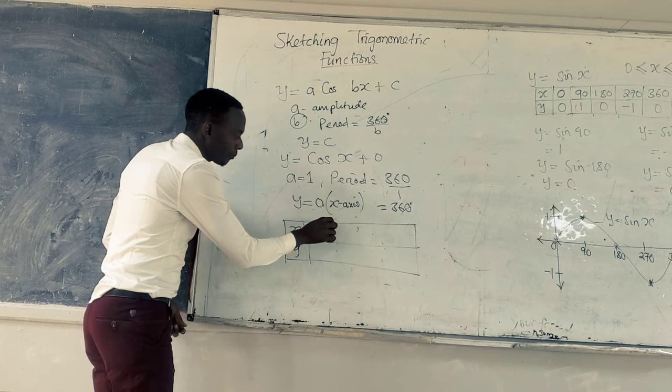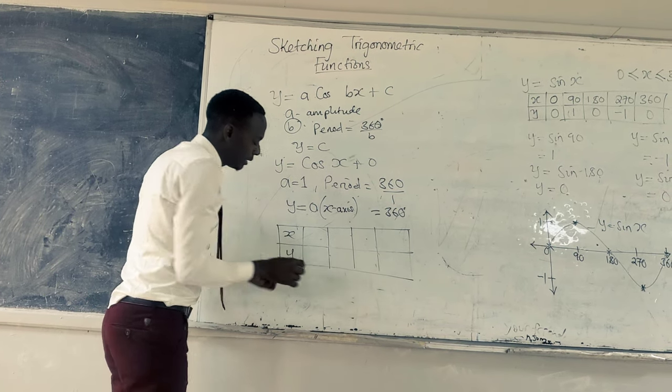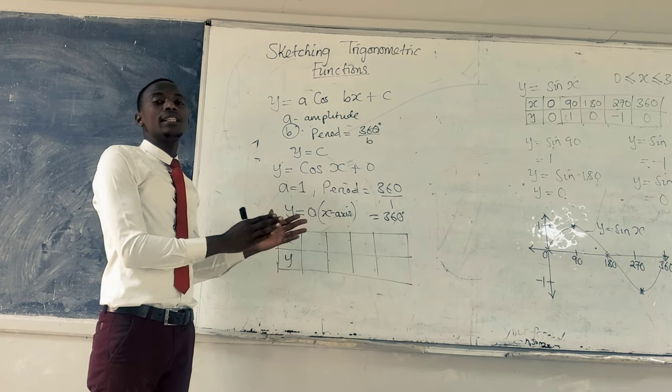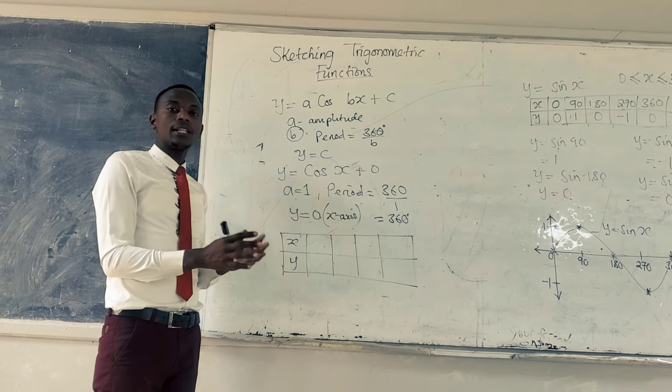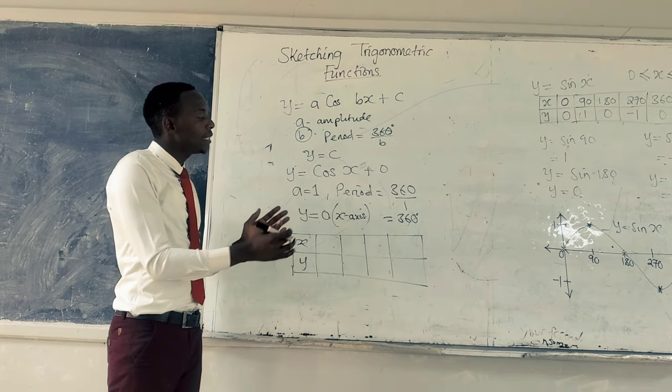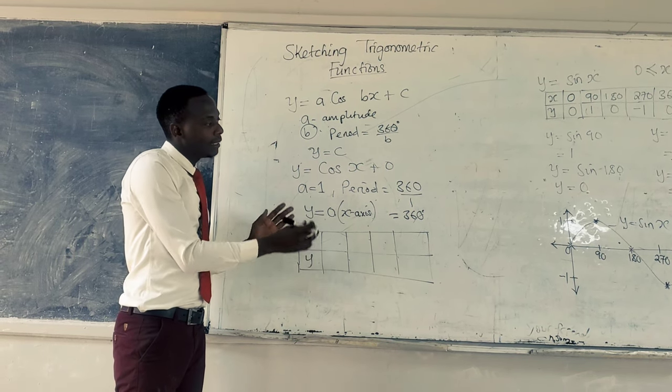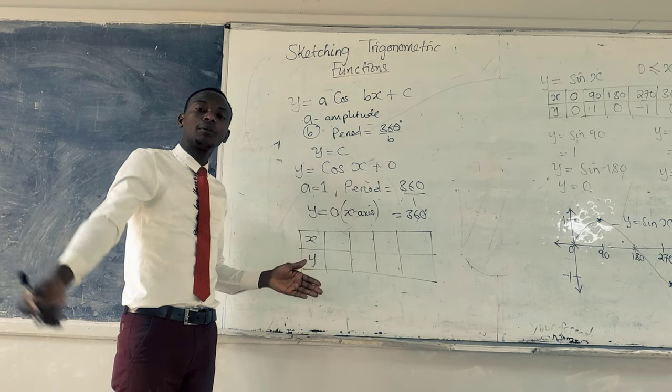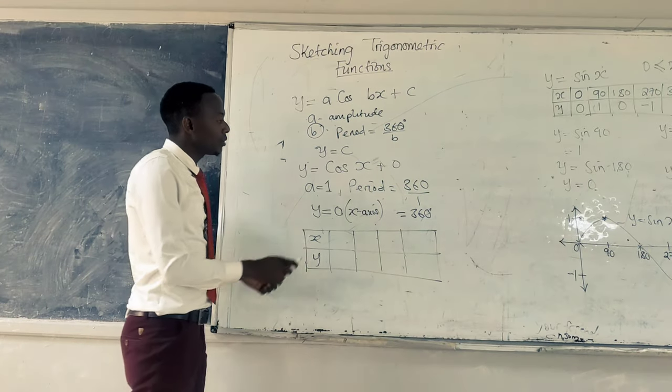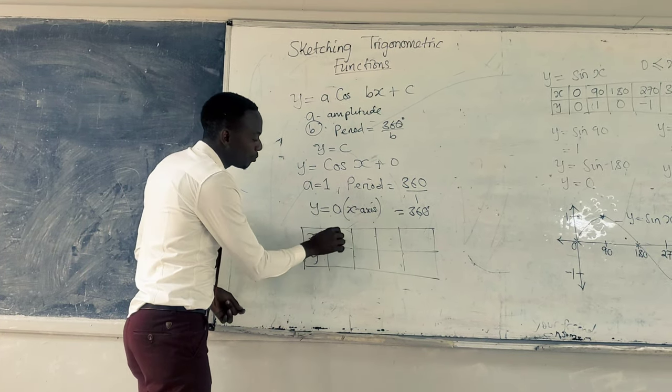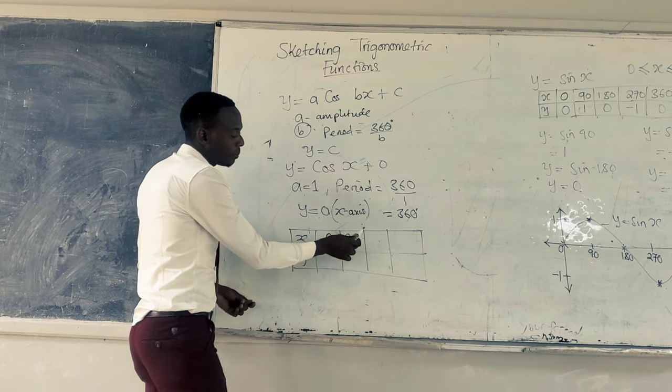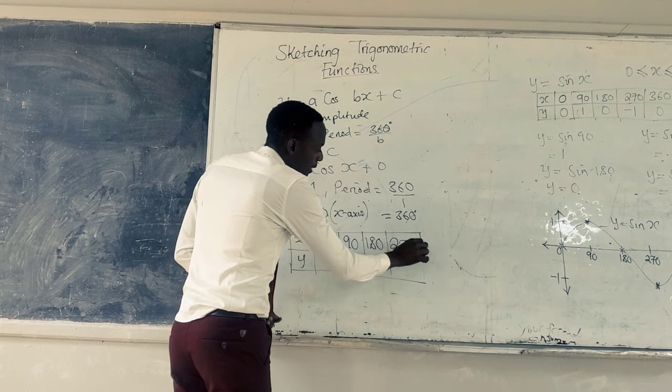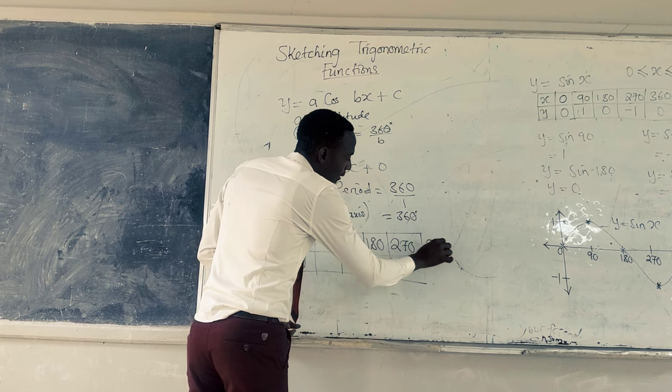So now when we are coming up with the table of values, we look for the intervals in which we can move. We can move in 30, we can move in 45, or even in 10, but we have to be very careful that we pick a number which is going to help us sketch the function such that it fits the page. In this case, we are opting for 90, so we are going to move from 0 to 90, plus 90 gives us 180, plus 90 gives us 270, plus 90 gives us 360 degrees.